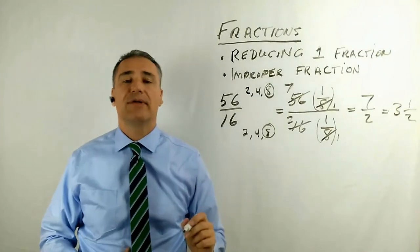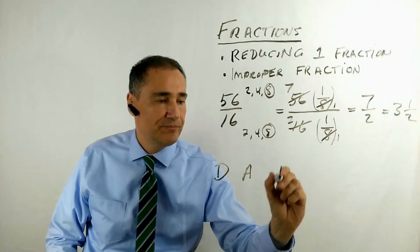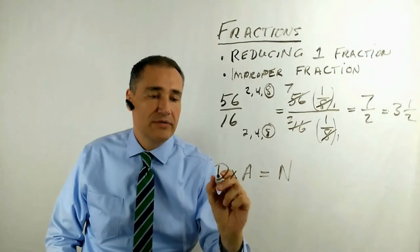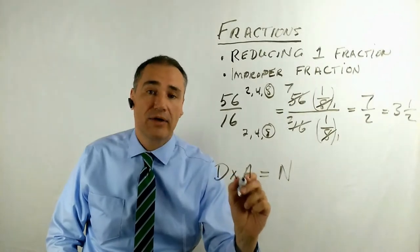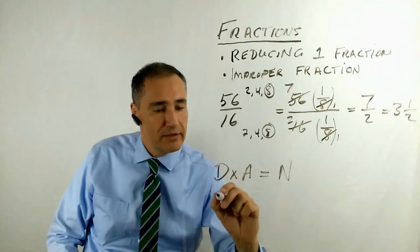Now, remember I taught you about how to check your answer. You should use the Dan method. That's your denominator multiplied by your answer equals the numerator. So the denominator, numerator, denominator, that's 16.